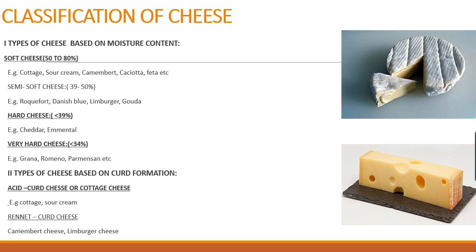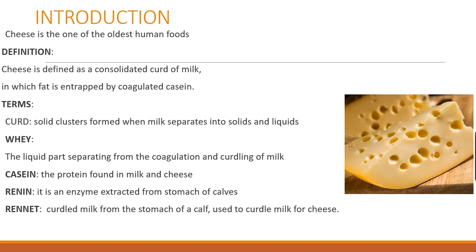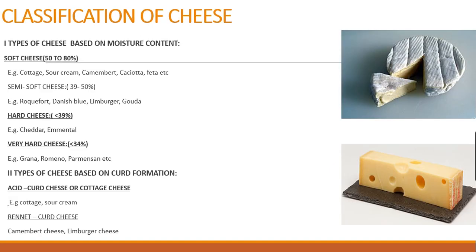Cheese has certain physical characteristics: protein coagulation due to proteolytic enzymes, and much of the water content is removed in the form of whey. Typically from 100% milk you get only about 10% cheese. The composition of cheese includes fat, protein, moisture content, minerals, and vitamins, which differ greatly with the variety.